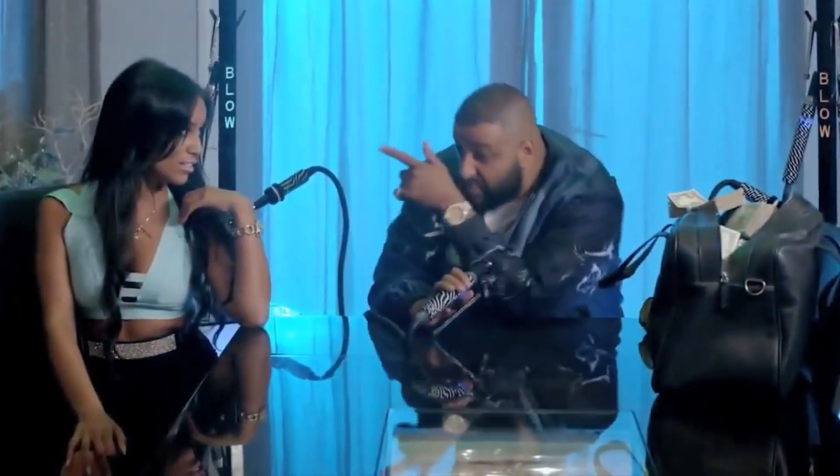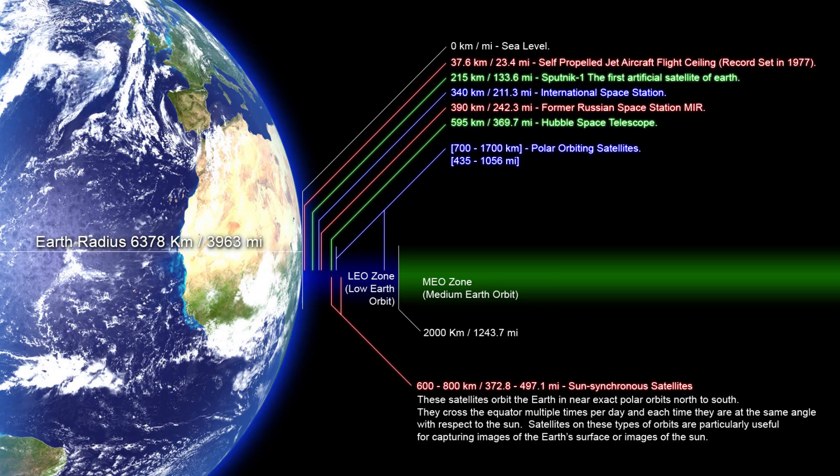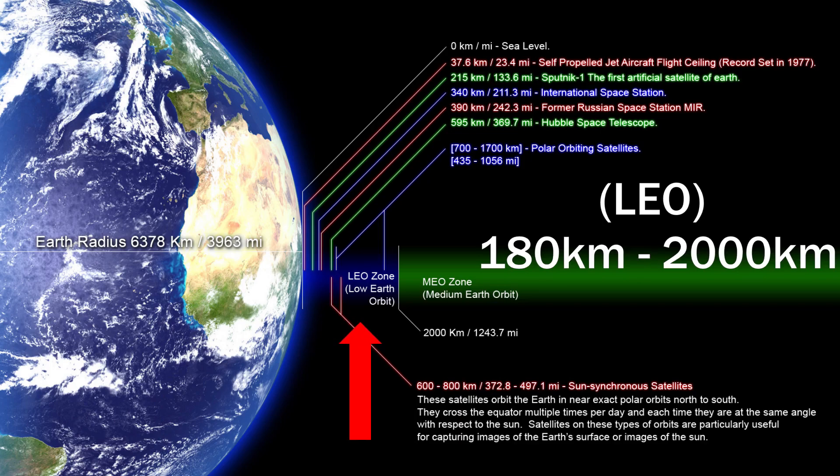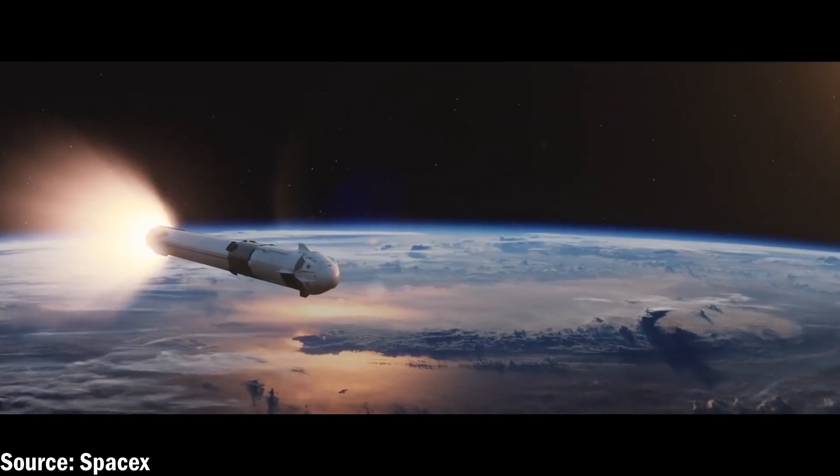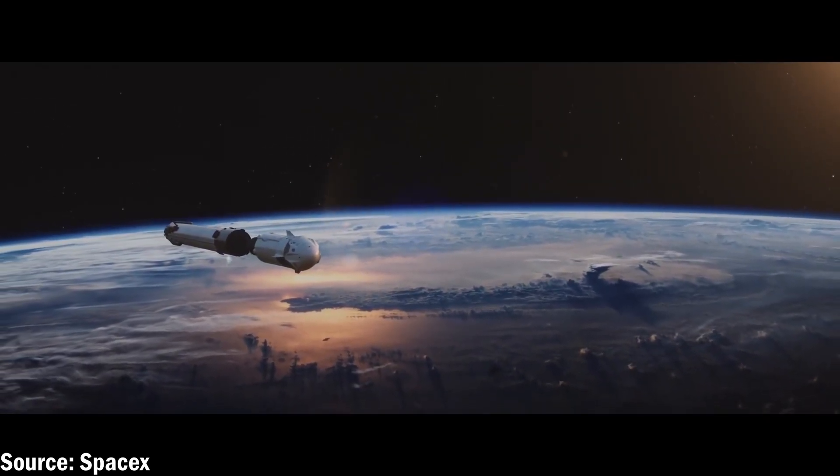Low Earth orbit is the lowest and also happens to be the most common orbit. Satellites in low Earth orbit can be anywhere from 180 kilometers to about 2,000 kilometers — or about 100 miles to 1,200 miles high. The first reason it's the most common is that it's the easiest to get to and the cheapest. Another reason is that satellites in this orbit can provide high bandwidth and relatively low communication latency, and they require less powerful amplifiers to transmit data back to Earth.